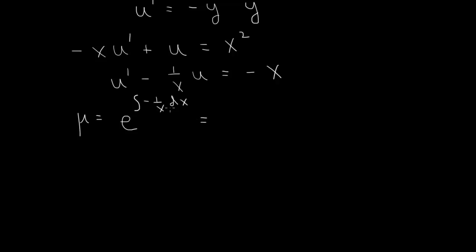That is minus log x, or log of x to the minus 1. And then you take the exponential of that, so you get 1 over x. So the integrating factor here is 1 over x. So we should multiply this equation by 1 over x to get the total derivative.